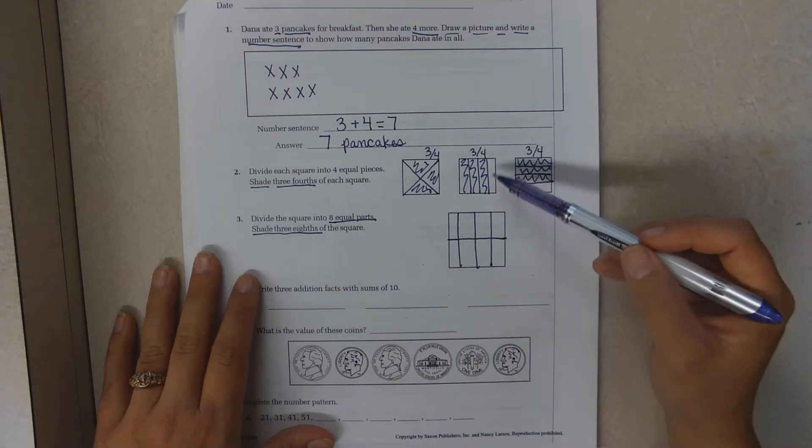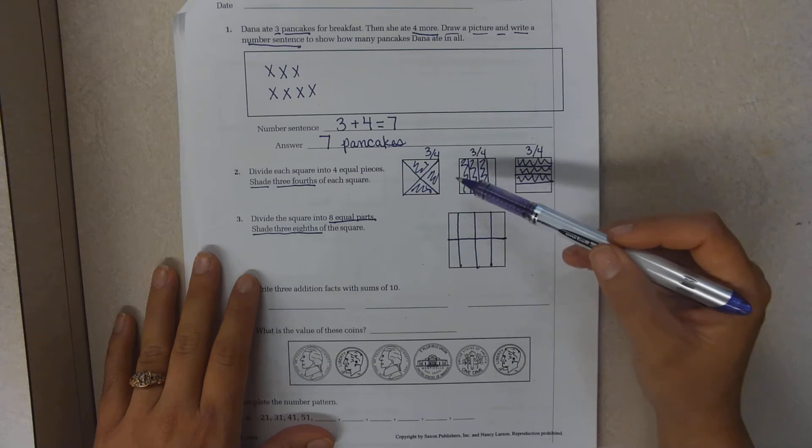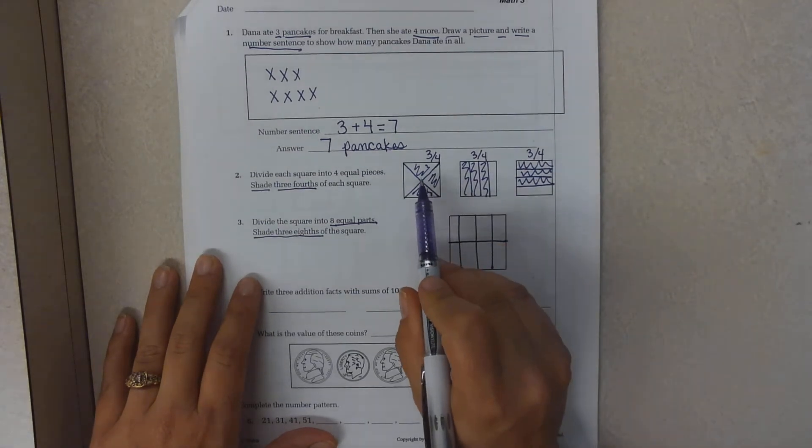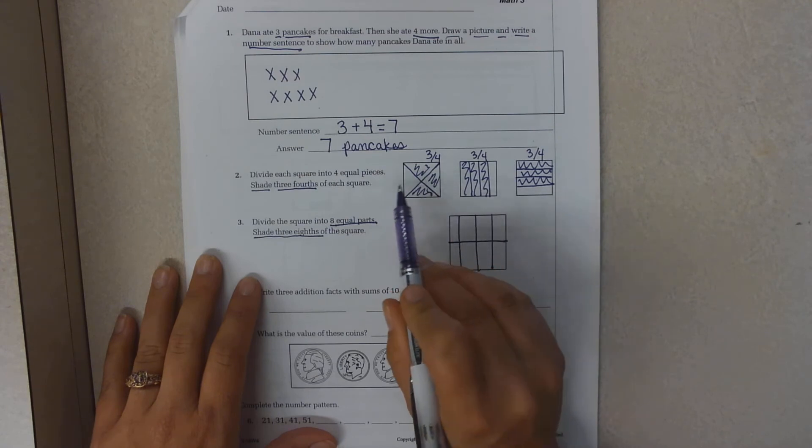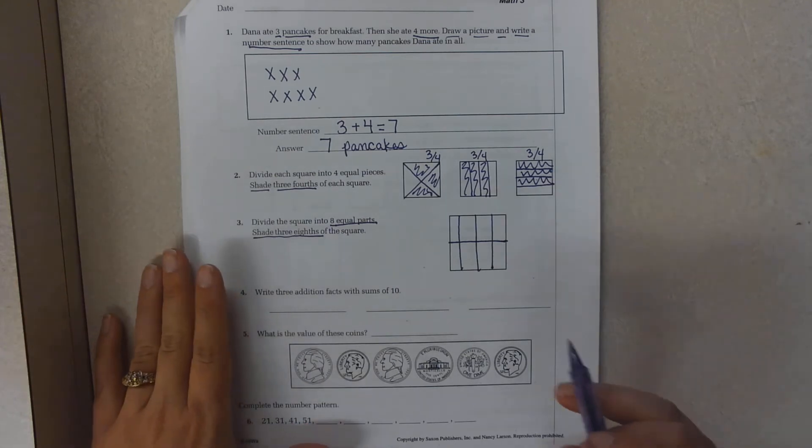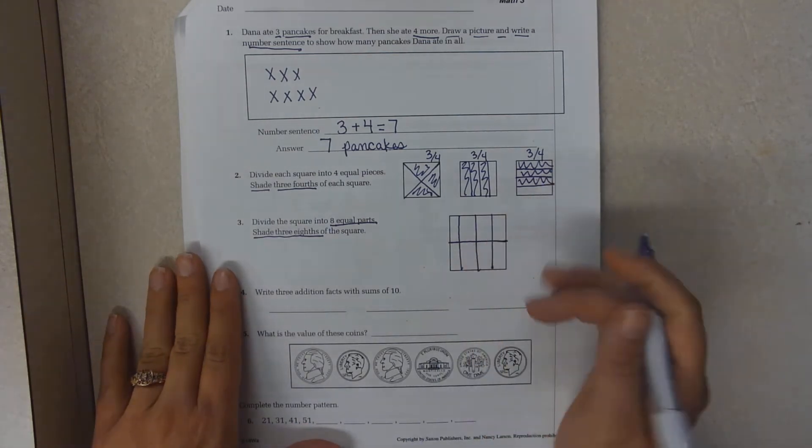Another way is you can just draw seven lines like this or seven lines like this. And your final way that I know of to do it equally is you could cut these in half. So then it would make eight equal parts, but you can do it any way you want as long as you know these are equal.